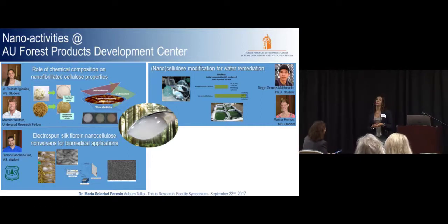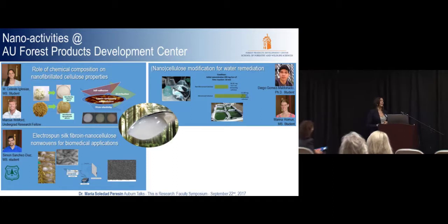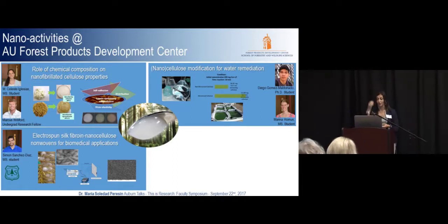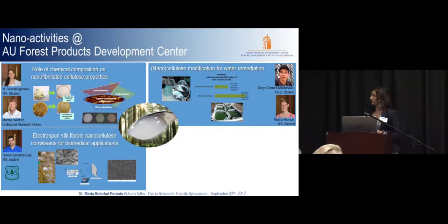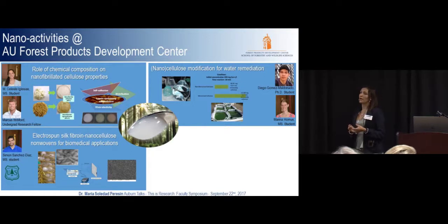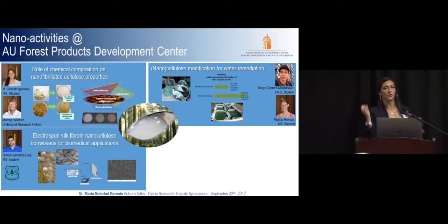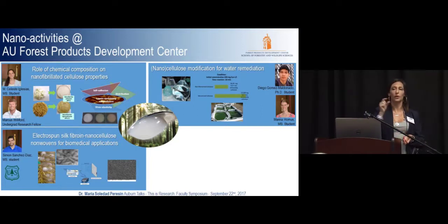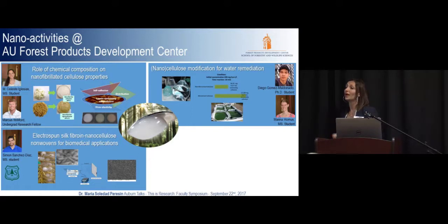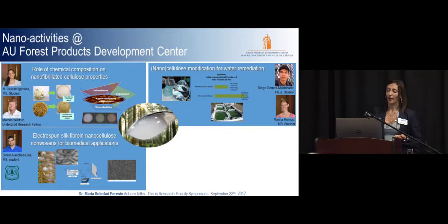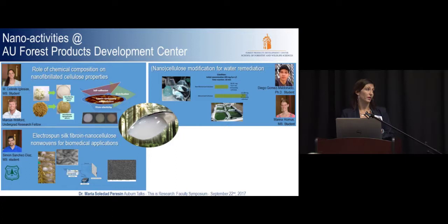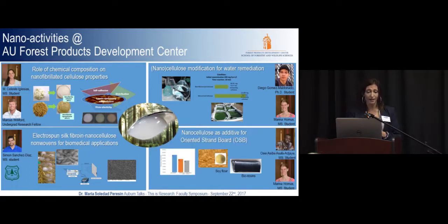We also have a student working with electrospun nonwovens. Simone is isolating silk fibroin from silk waste production and we are reinforcing it with nanocellulose. Using electrospinning, we are making nonwovens that can be used in biomedical applications such as tissue engineering and cell culturing. This project is supported through an agreement with the USDA Forest Service and Auburn University.